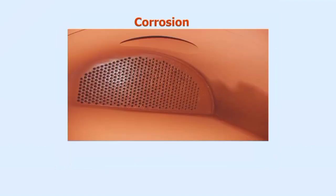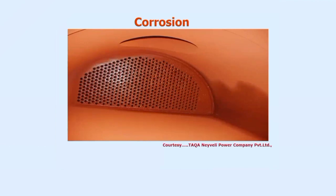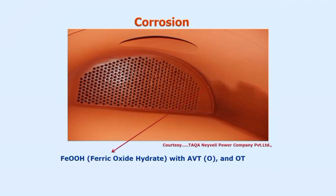The other protective oxide, which is a little reddish in colour — not the grey colour protective oxide — is called the hematite protection. This happens to be a better protective oxide as compared to magnetite because it is much more stable. This is called the hematite protection, or ferric oxide hydrated, FeOOH protection.